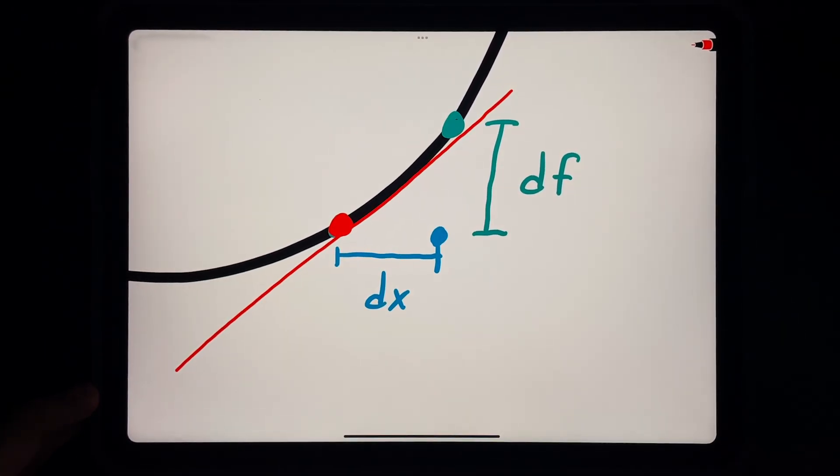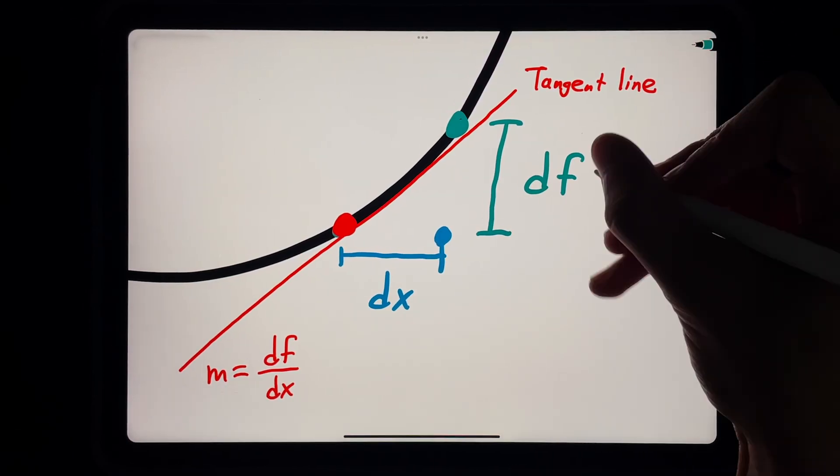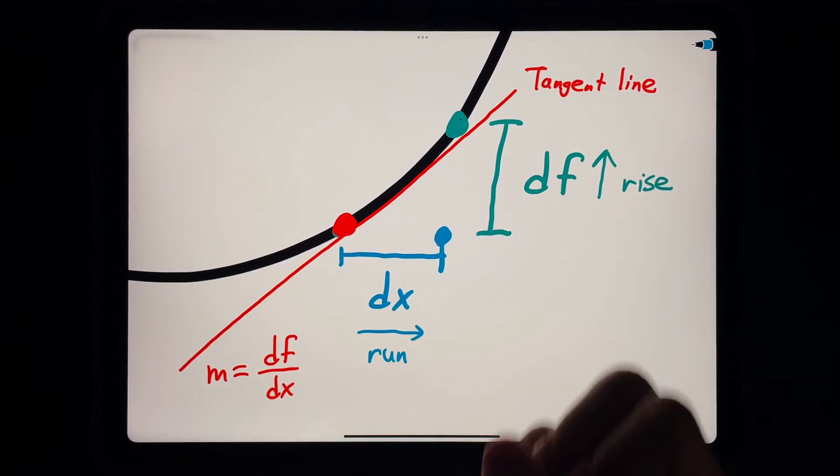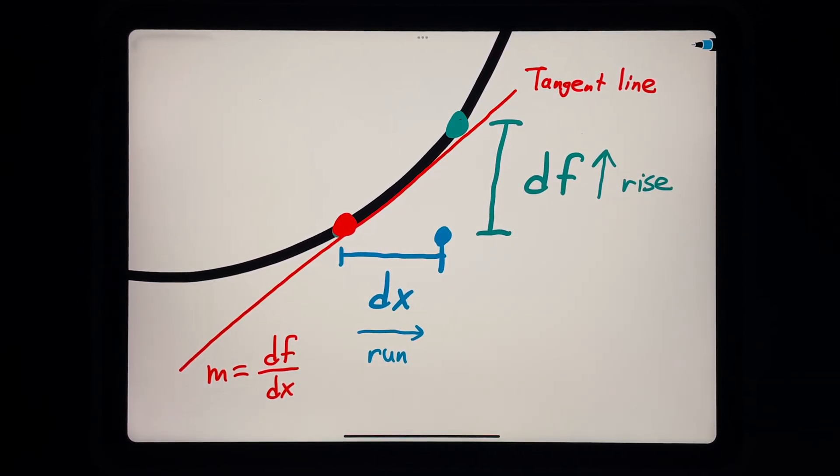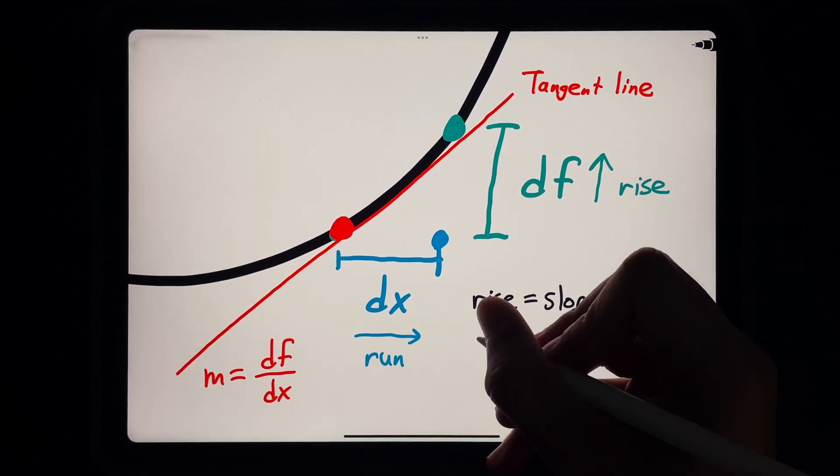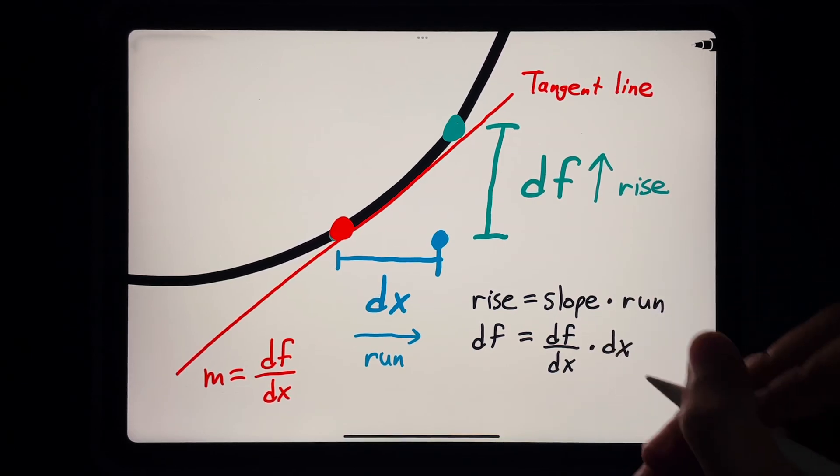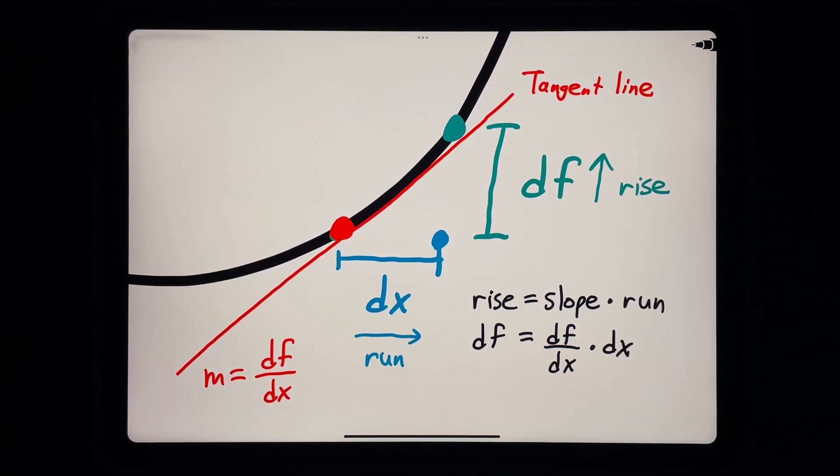You might have heard that df dx is the slope of a tangent line to f at a given x. This makes sense. df is our vertical rise and dx is our horizontal run. And if we divide rise over run, we get the slope. To get df, we just have to multiply that slope by the corresponding dx at a given point.